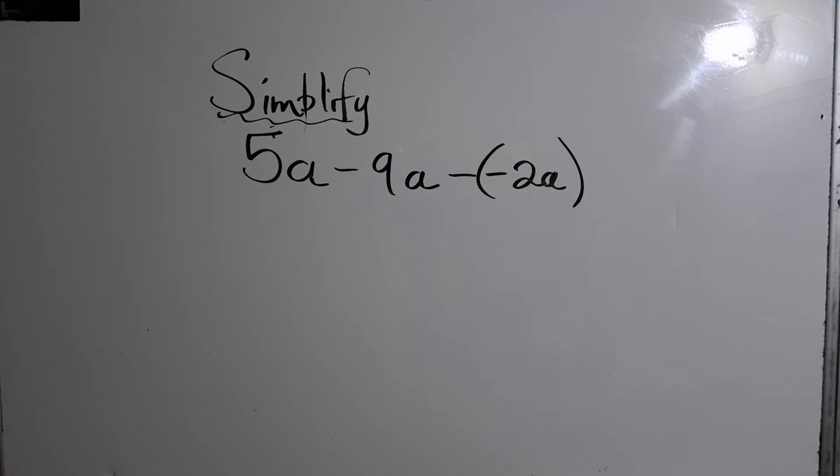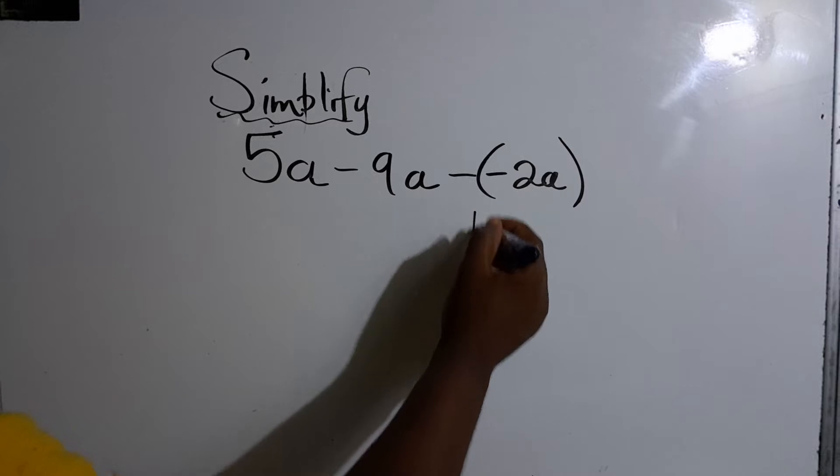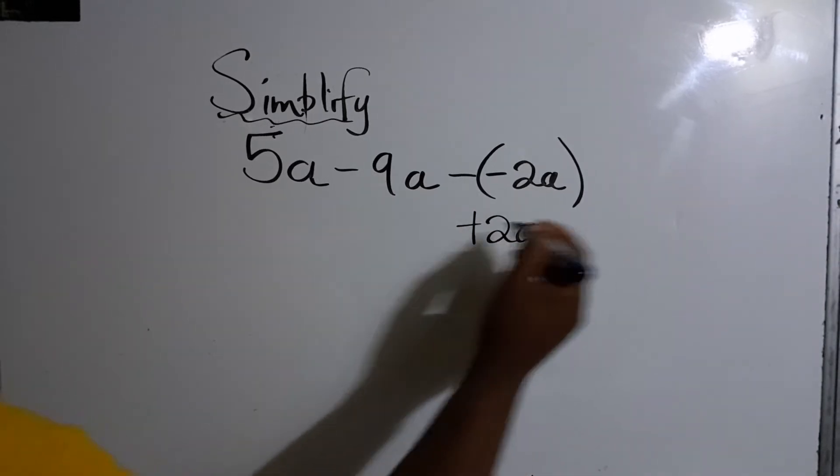All right, so we're going to approach the bracket first. Now, negative times a negative, that's positive. So this becomes positive 2A.